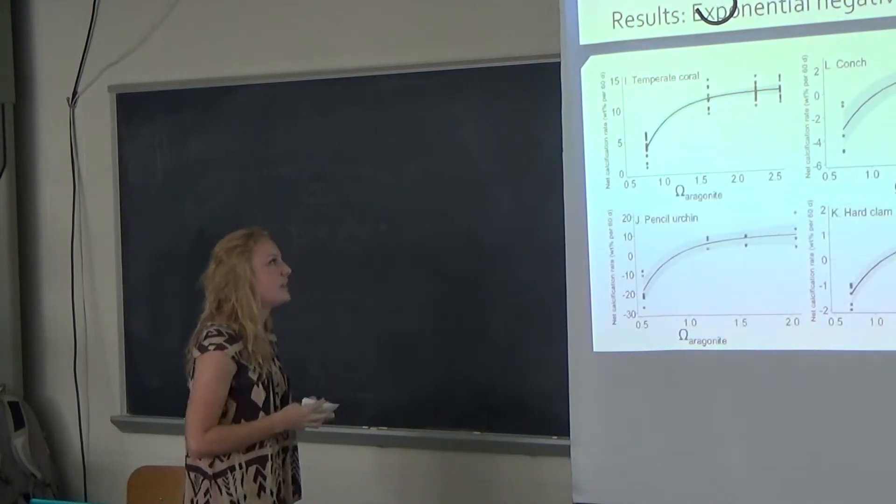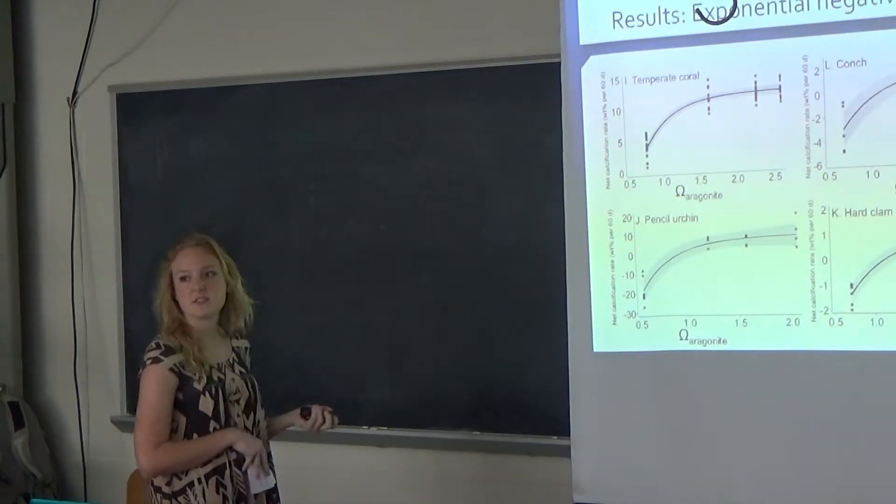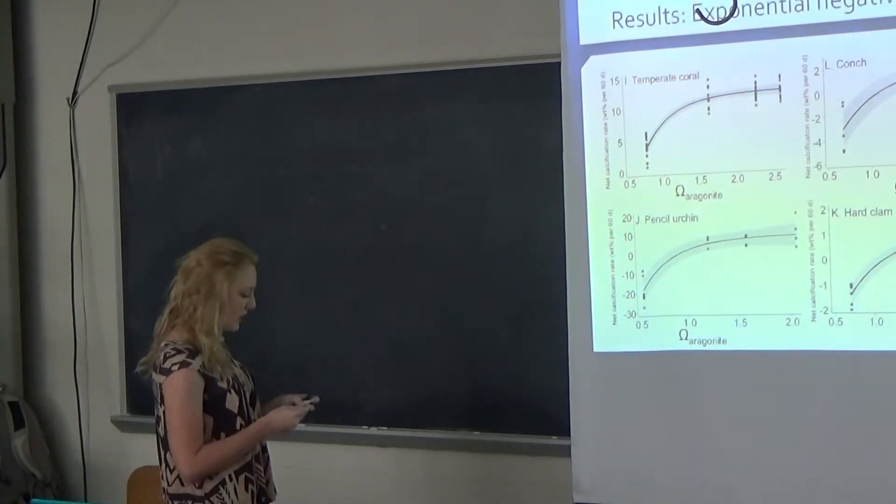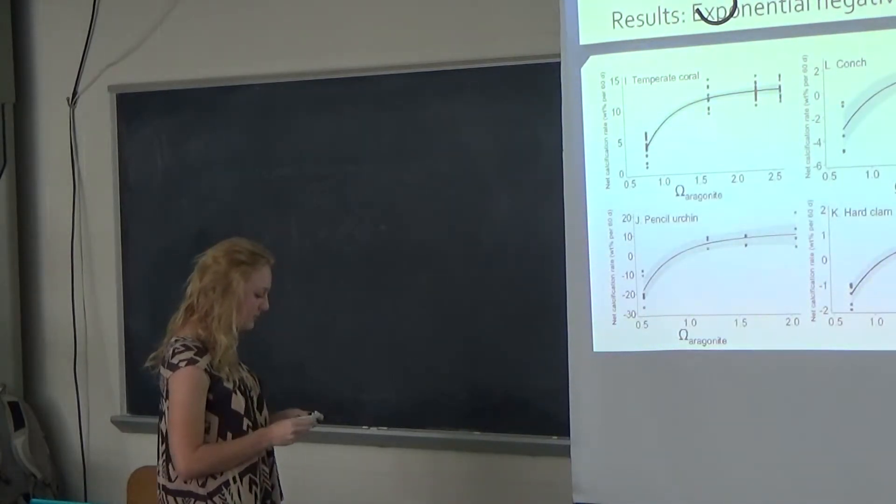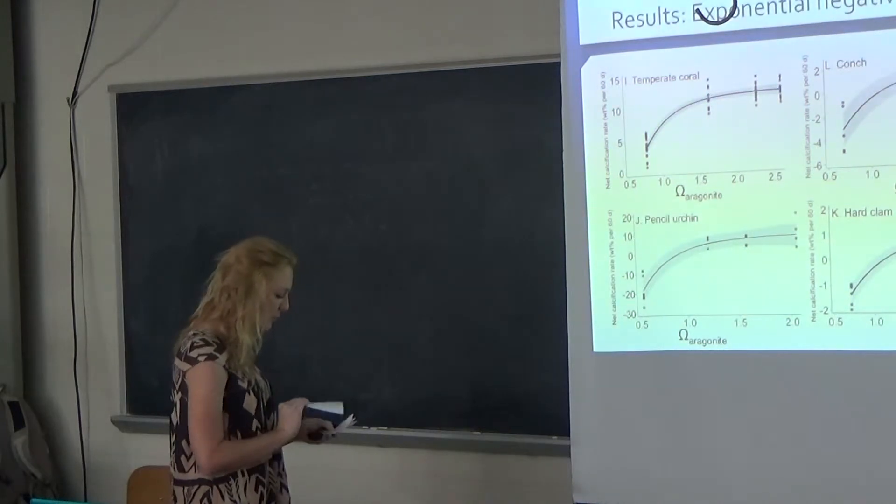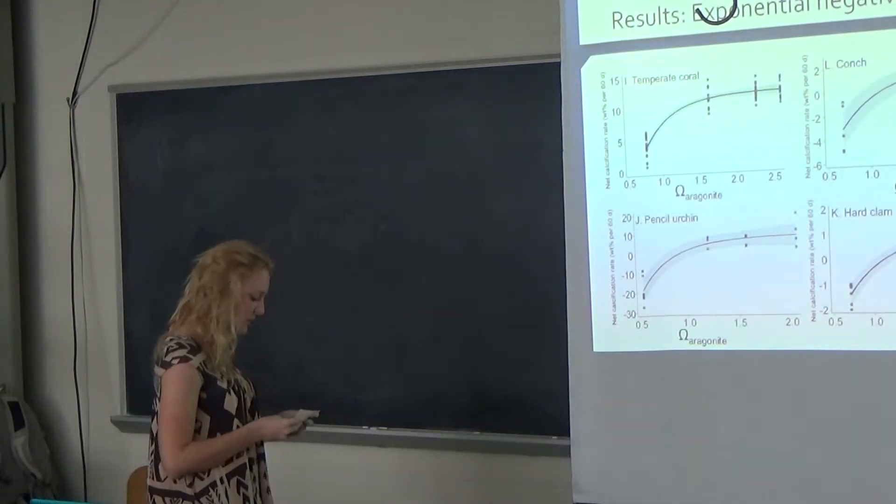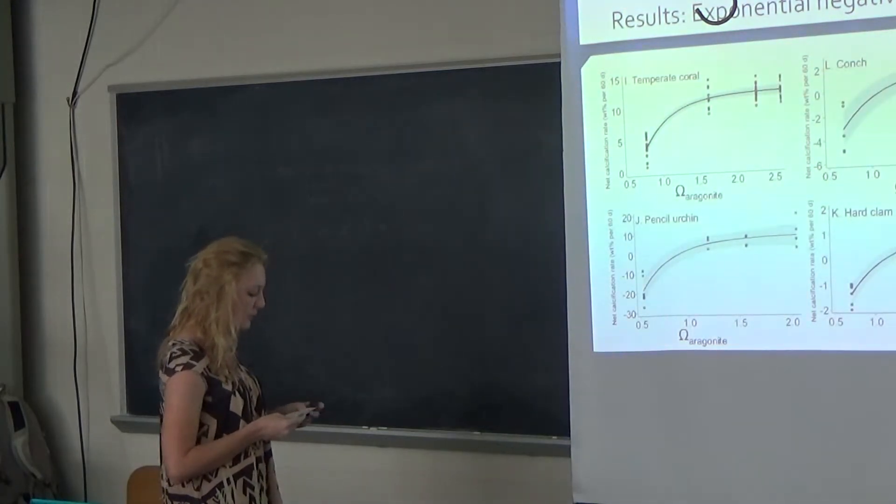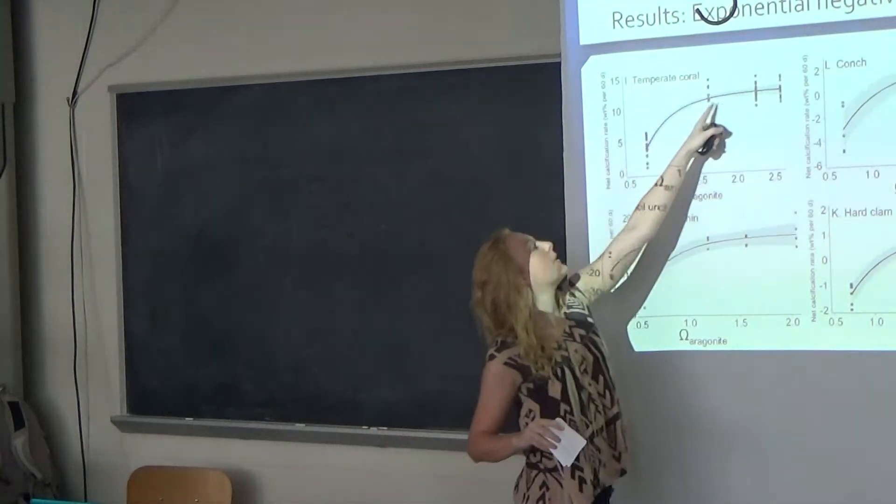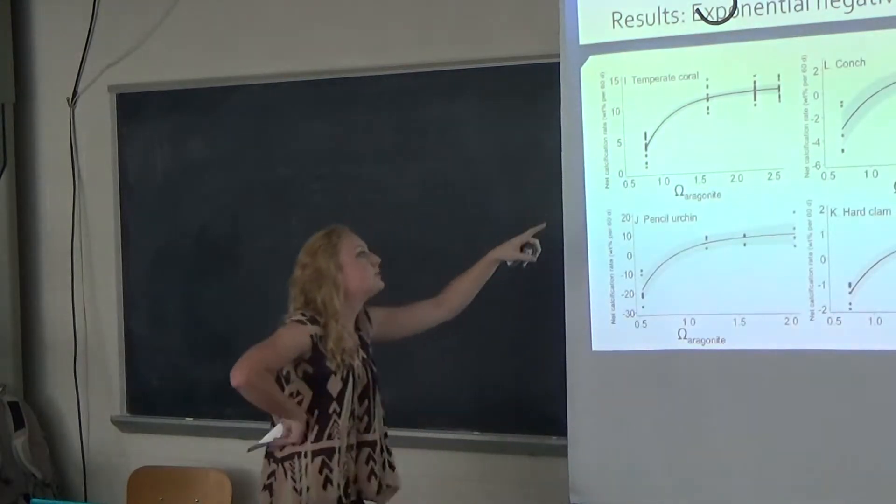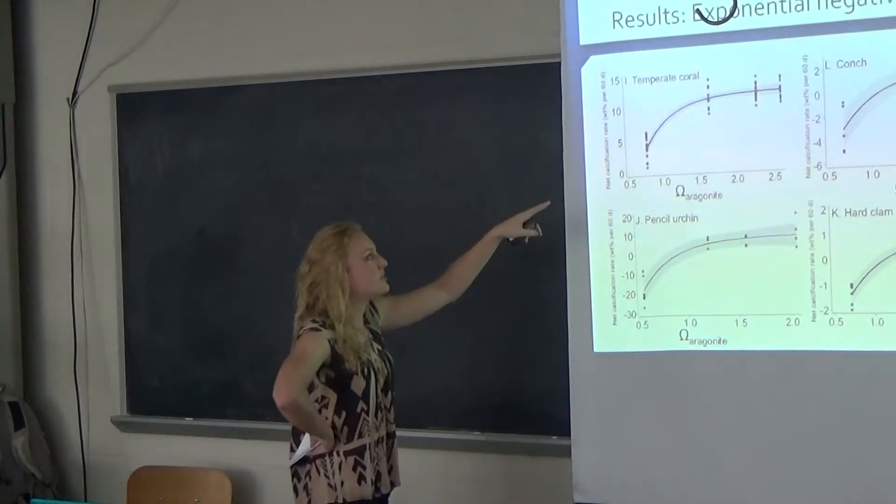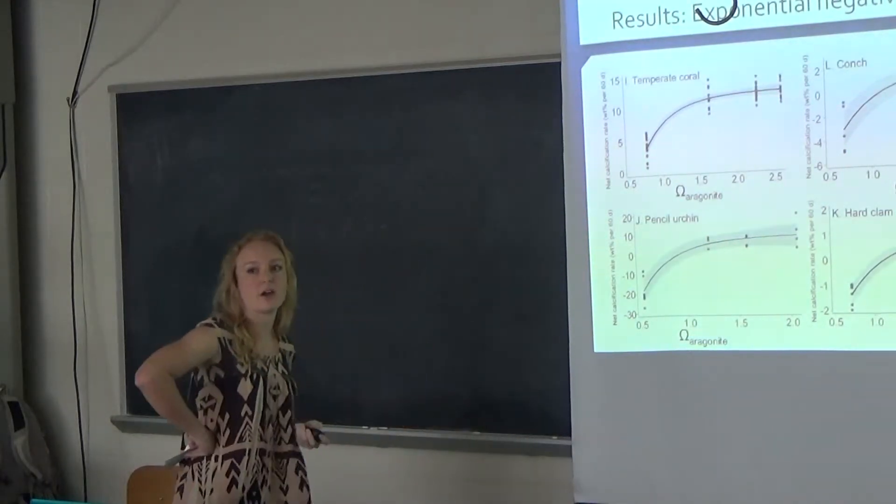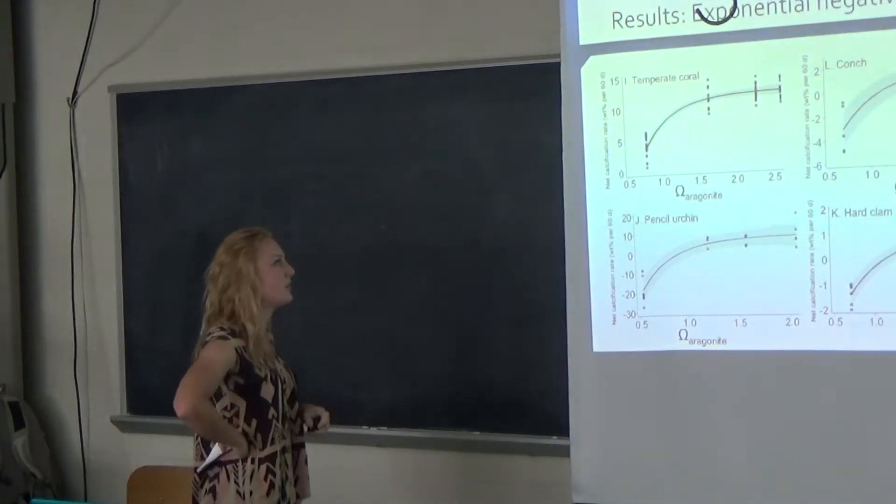We also see negative threshold here as well, but instead of being linear, we see it being exponential. What we're looking at is the calcification, when it is increasing, increases greatly at the middle and then remains constant throughout. Whenever the CO2 levels are decreasing, you can see that it just stays constant. I'll talk about that later within the factors that affect the organisms.